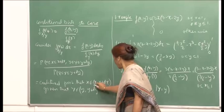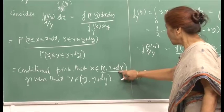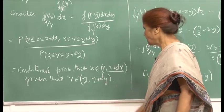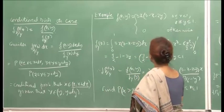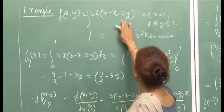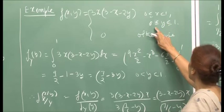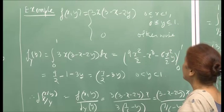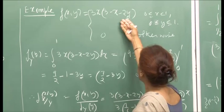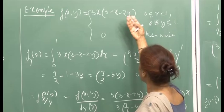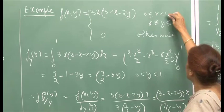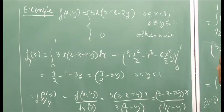So this ratio represents the conditional probability of x lying between small x and x+dx, when you are given that capital Y is between y and y+dy. This is what I have expressed here: capital X belongs to [x, x+dx] given that Y belongs to [y, y+dy]. Now let us look at an example. Suppose this is a joint density function with x and y both lying between 0 and 1. You can verify this is a joint PDF — the double integral of this expression should equal 1.